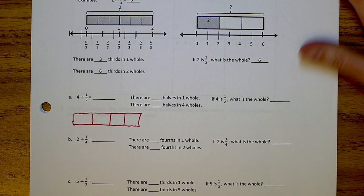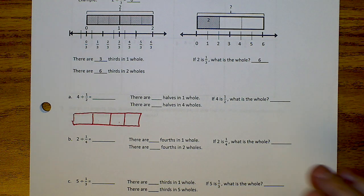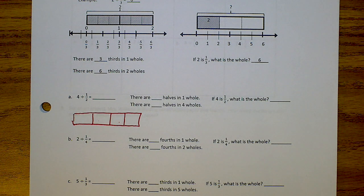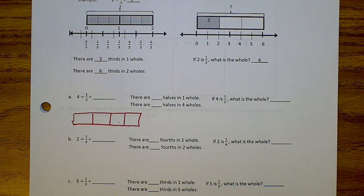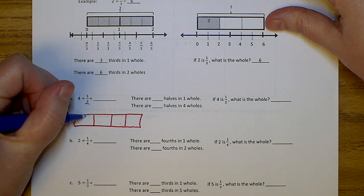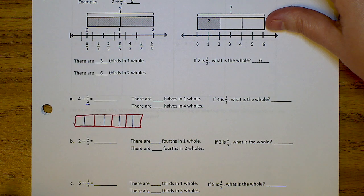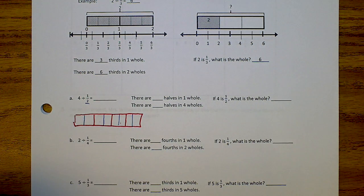So how many whole numbers do I have in this box? Four. This is one whole, two whole, three whole, four whole. Now it says I'm going to divide it by 1 half. Each whole is going to be divided by 1 half. You're looking at your denominator, so each box gets divided into two parts: one, two — one, two — one, two — one, two. Each whole is divided in half.